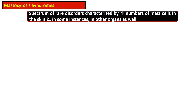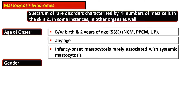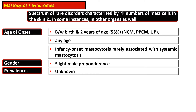Mastocytosis syndromes are a spectrum of rare disorders characterized by increased numbers of mast cells in the skin and, in some instances, in other organs as well. The common age of onset is between birth and two years of age, and about 55 percent of cases occur in this age group, including nodular cutaneous mastocytosis, papular-plaque cutaneous mastocytosis, and urticaria pigmentosa.